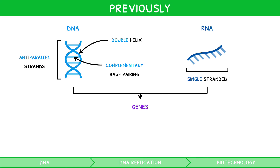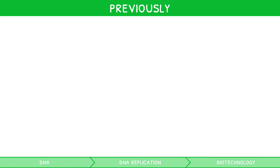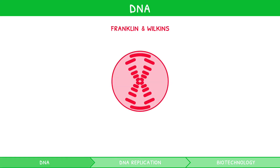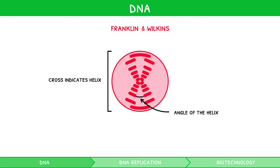However, for IB Biology higher level, you must learn a little more detail on the work of Franklin and Wilkins. You should know that for their observed crossed pattern: the cross indicated a helix shape, the angle of the cross showed the angle of the helix, the horizontal bars were 3.4 nanometers away from each other, and the distance between the middle and top of the diffraction pattern meant that DNA had a repeating structure.